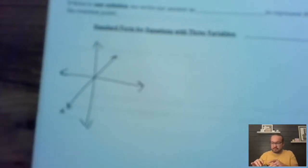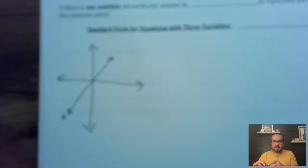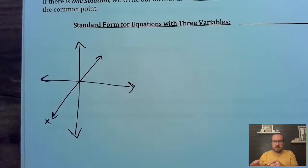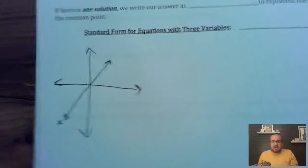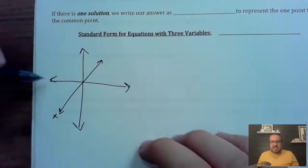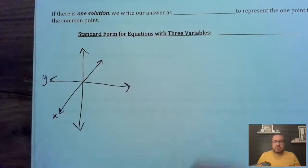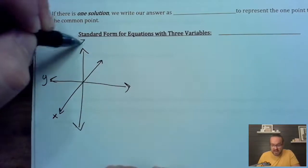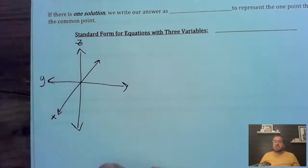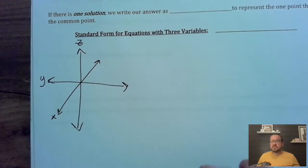X is now the forwards and backwards dimension. Y is no longer the up and down dimension — it's now the side to side dimension. And the Z dimension is the one that goes up and down. We don't call these ordered pairs anymore. We call them ordered triples.